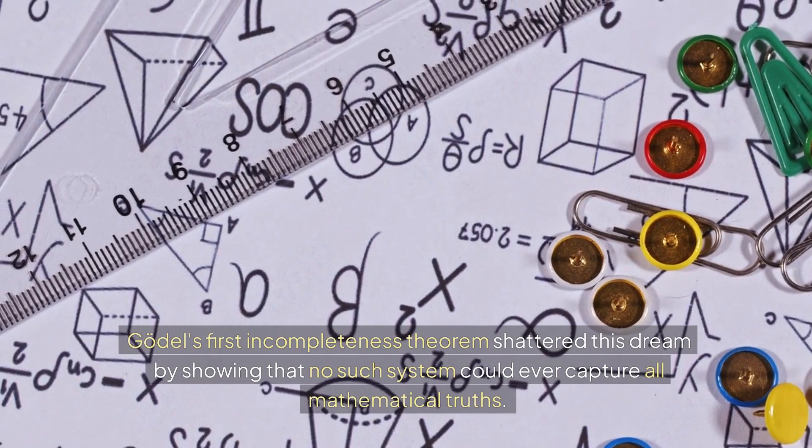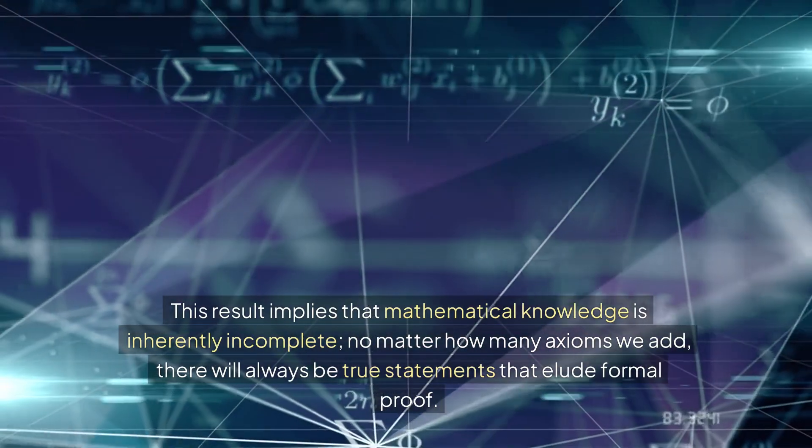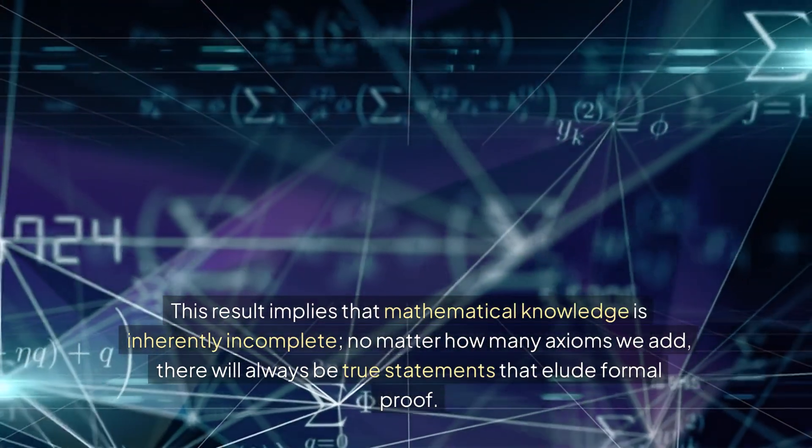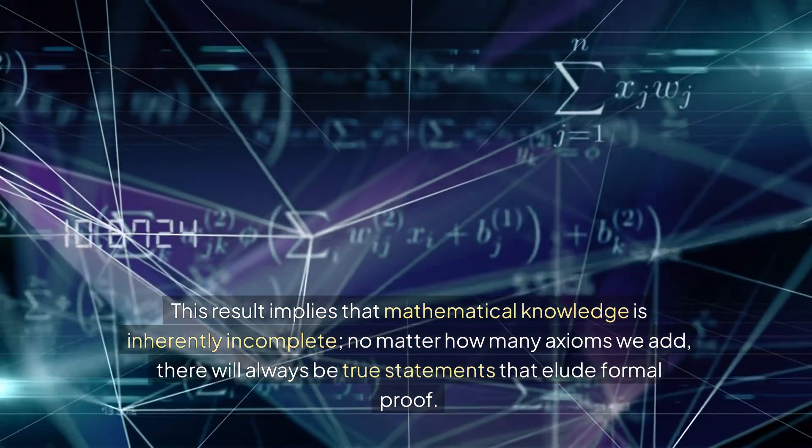Gödel's first incompleteness theorem shattered this dream by showing that no such system could ever capture all mathematical truths. This result implies that mathematical knowledge is inherently incomplete. No matter how many axioms we add, there will always be true statements that elude formal proof.